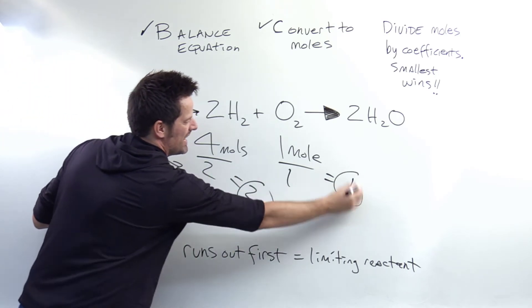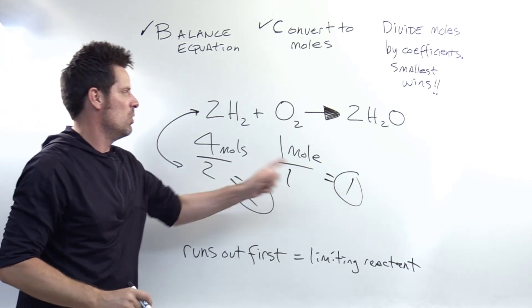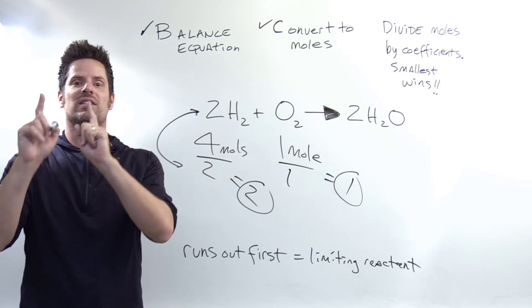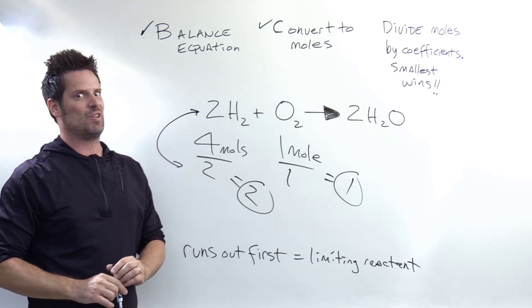Which of these two numbers, a 2 or a 1, is smallest? Yeah, it's the 1, which means O2 is the limiting reactant and hence this question's correct answer.